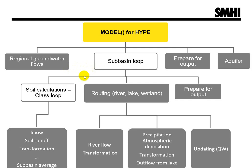Soil calculations are the first in the main sub-basin loop. All classes with soils are calculated — these include glaciers, floodplains, and wetlands. Within the class loop, soil processes are calculated. This includes, for example, calculation of snow, percolation of water in soil, runoff and irrigation, groundwater table, denitrification, and other nutrient transformation processes in the soil.